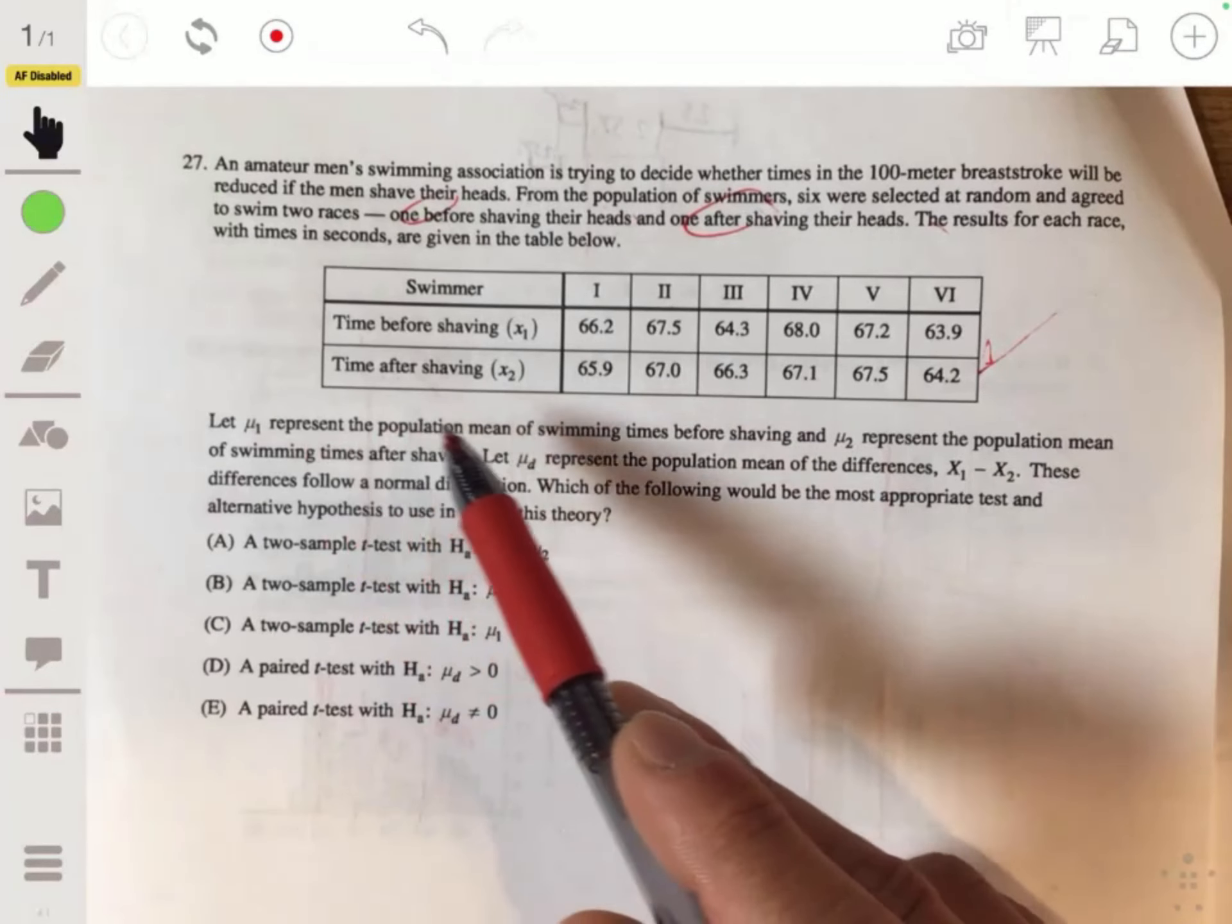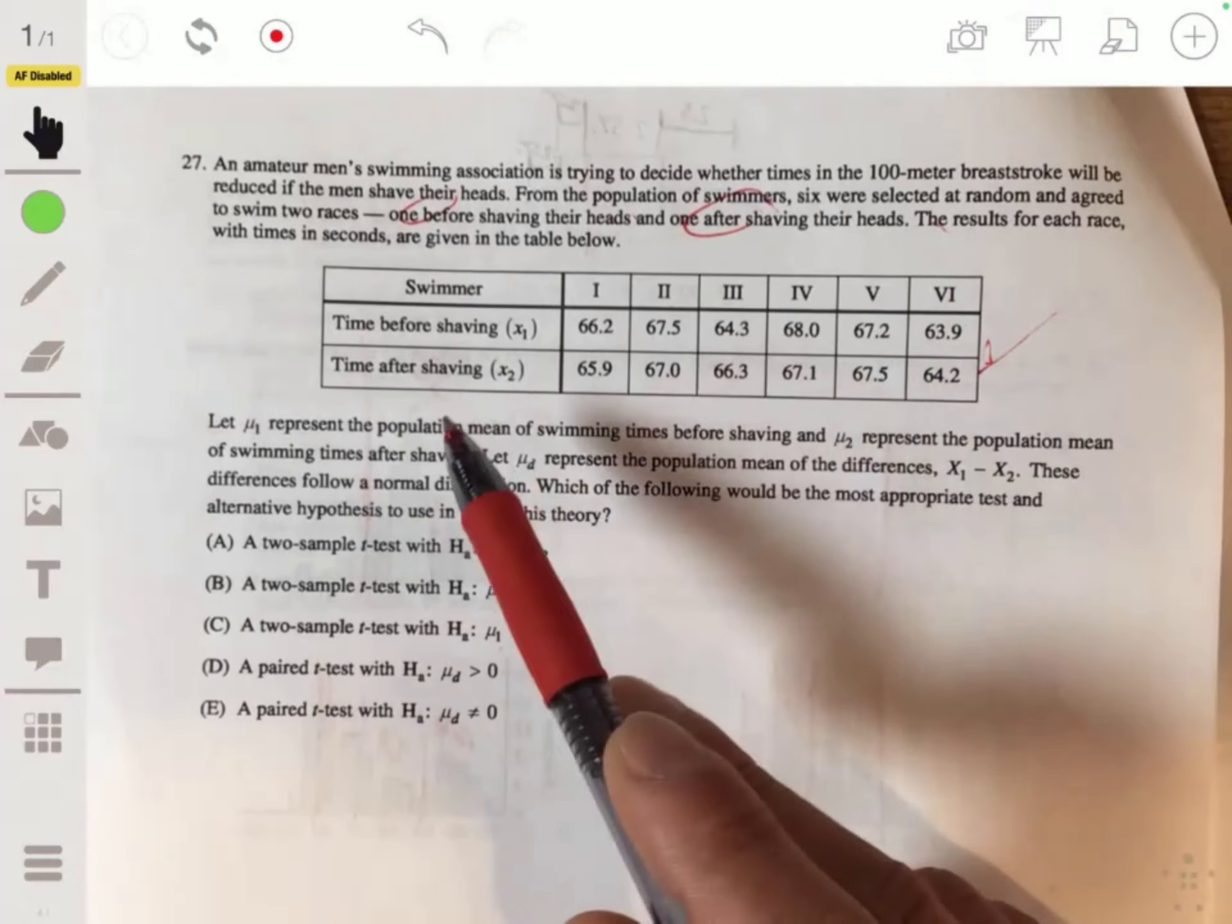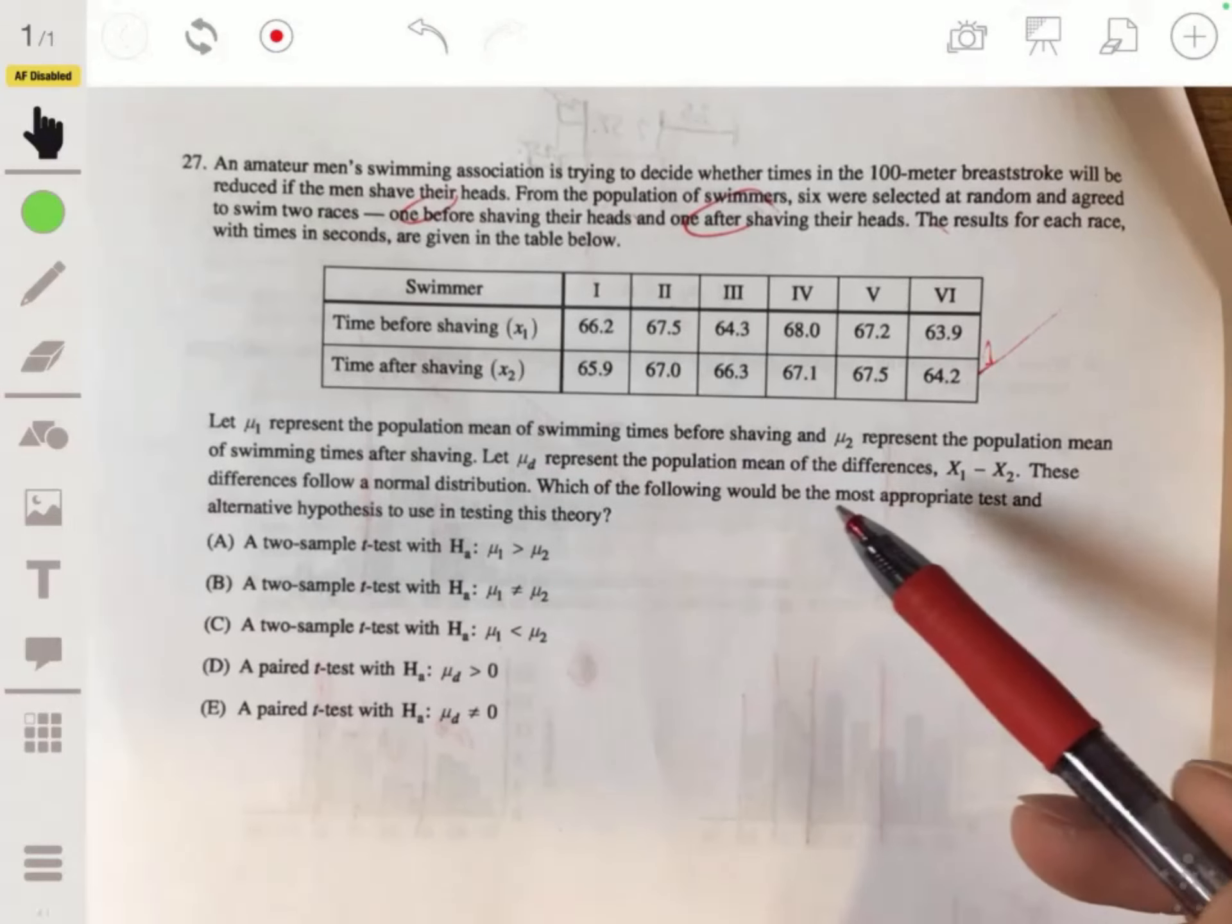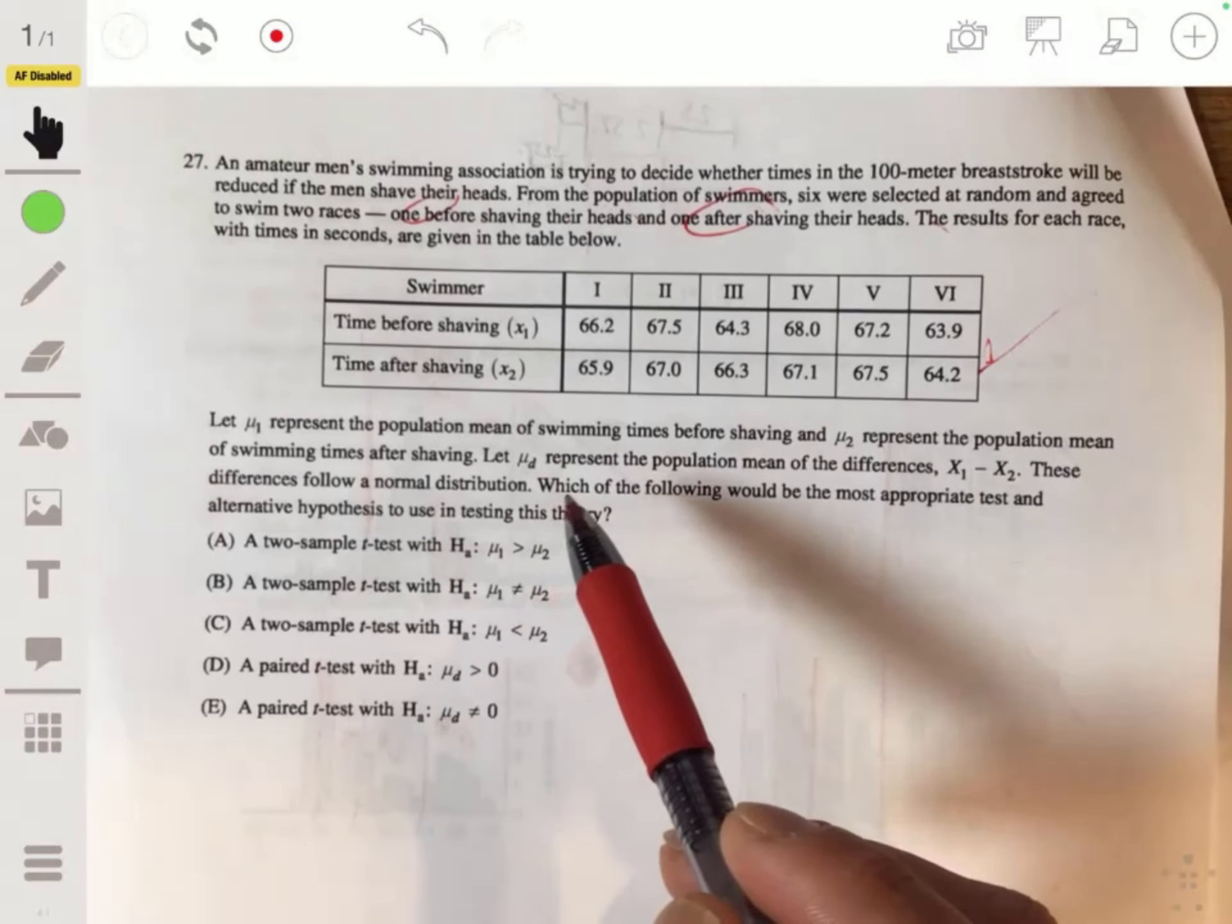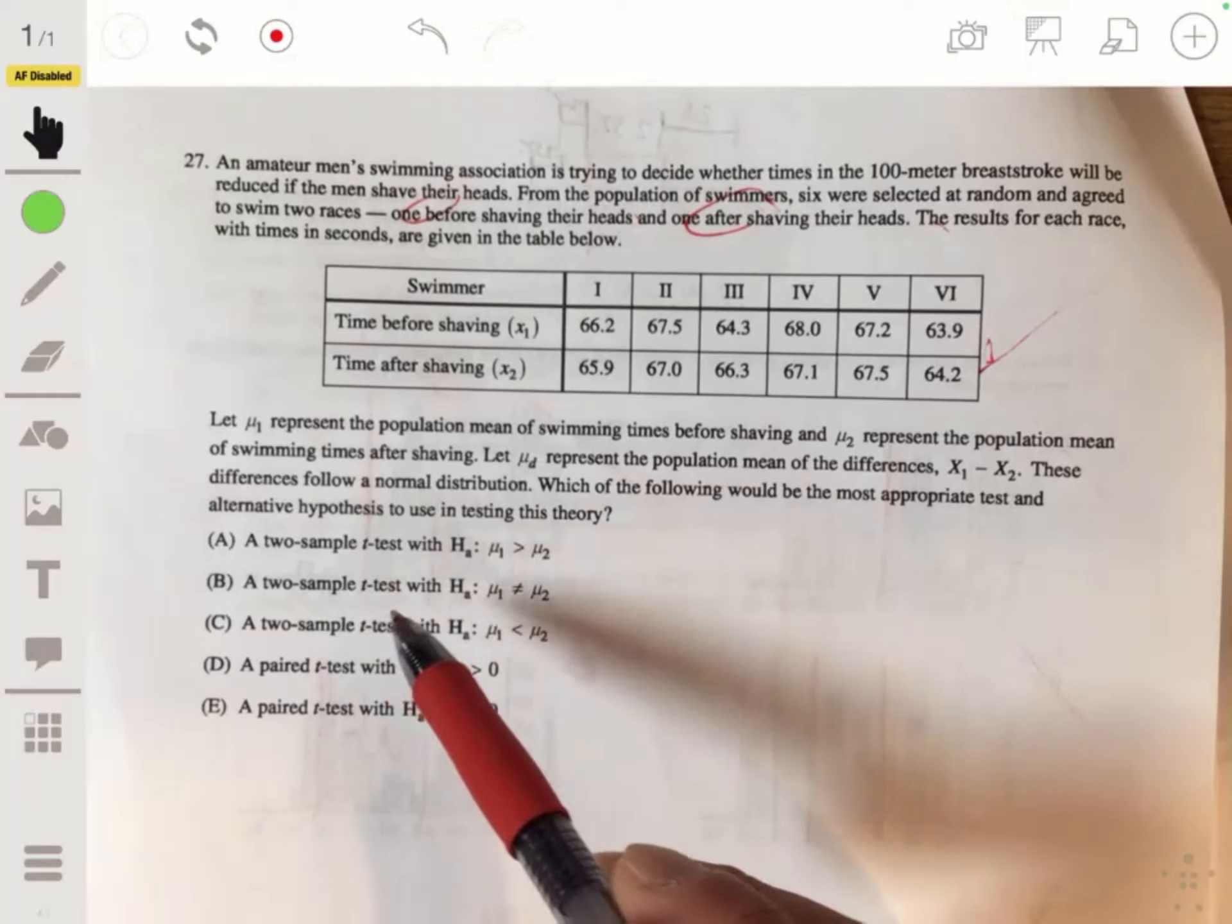The results for each race with times in seconds are given in this table. μ1 represents the population mean of swim times before shaving, μ2 represents the population mean after shaving. μD represents the population mean of the differences x1 minus x2. These differences follow a normal distribution. Which of the following would be the most appropriate test and alternative hypotheses?